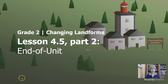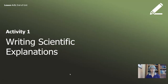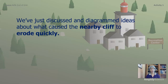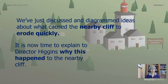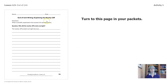Hello everyone! Thanks for coming back and joining us for the last part of the last lesson in changing landforms. This video is broken up into two activities and we are going to be writing our scientific explanations. We just discussed and diagrammed ideas about what caused a nearby cliff to erode quickly in Part A video. It is now time to explain to Director Higgins why this happened to the nearby cliff. Turn to this page in your packets — the end of the unit writing explaining the nearby cliff.